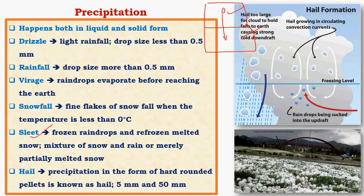Hail is significant-sized ice pellets which fall to the ground, especially during thunderstorms. We can see in this example that hail formation occurs due to successive upliftment of an ice crystal over a period of time. We will see this in detail while studying about thunderstorms.